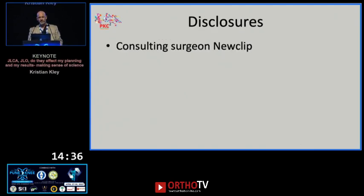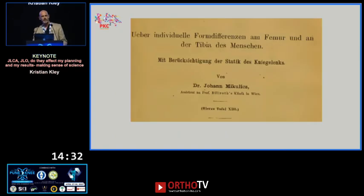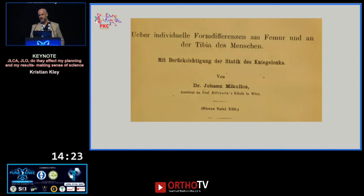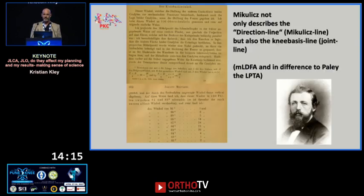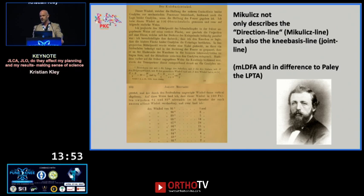Talking about joint line obliquity and alignment overall is strongly linked with the name Johan Mikulic. He would deserve several lectures about himself alone. This is an excerpt of his thesis paper, done some 150 years ago. In this paper he describes not only the direction line — the so-called Mikulic line — the connection from the proximal joint center of the femur to the distal joint center of the tibia, but also the knee basis line, describing joint line obliquity. He described the lateral distal femur angle and equally the lateral proximal tibia angle.